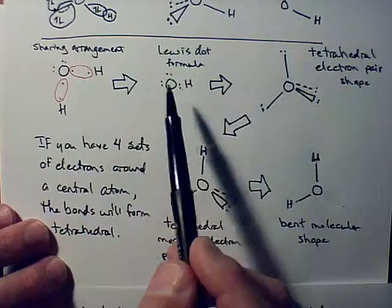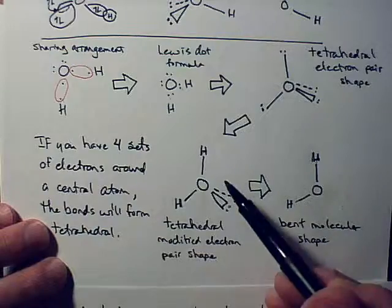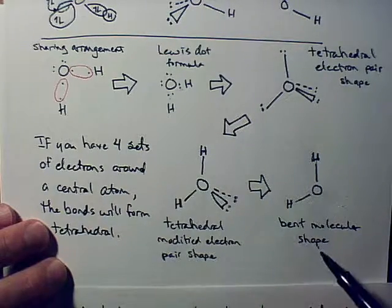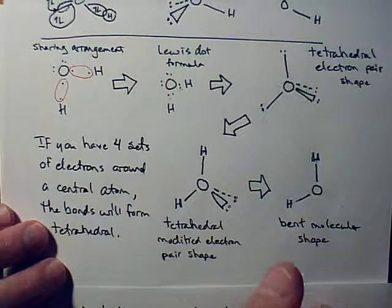So, you get the sharing arrangement figured out, then Lewis dot formula, then the electron pair shape, then modified electron pair shape, and finally, whatever the molecular shape is. This one happens to be bent, but there'll be a different name we'll have assigned to this one, okay, if we need to.